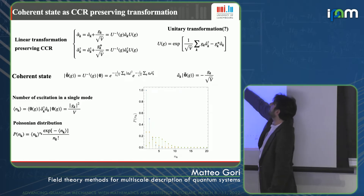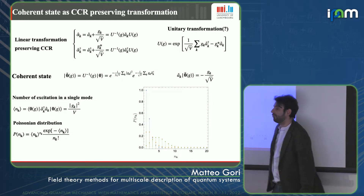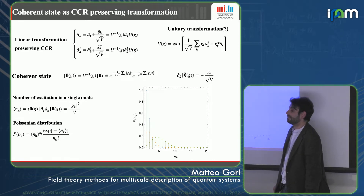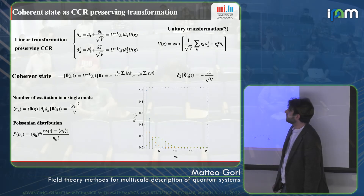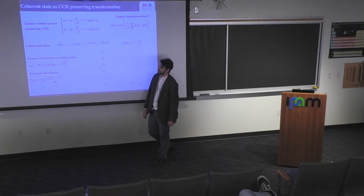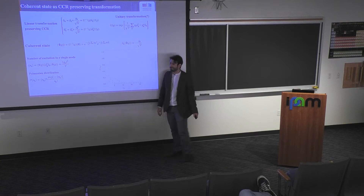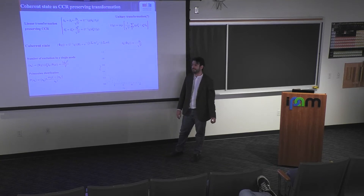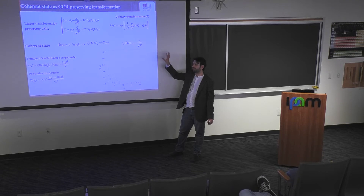So the constant c corresponds to a bosonic displacement — and for fermions, it does not make sense. You can only have bosonic shifts. When evaluating the number of particles in the coherent state, it is proportional to the square modulus of the shift, and the occupation number follows a Poissonian distribution.